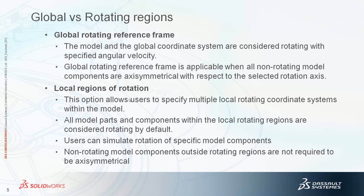The local region of rotation is exactly how it sounds — not the whole computational domain, but only a relatively smaller section is rotating, and everything else is affected by that rotation. In that case, you pick the local rotating option. You can actually have multiple local rotating coordinate systems within your model. All model parts and components within these regions are considered rotating by default.